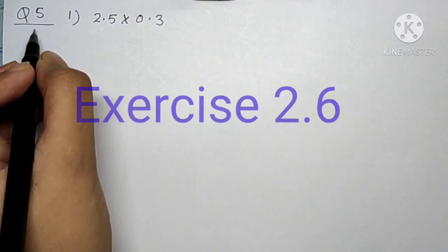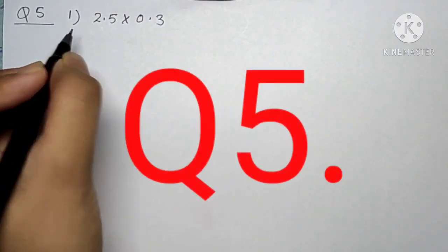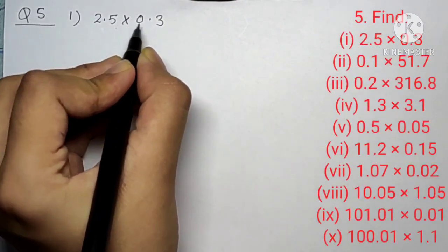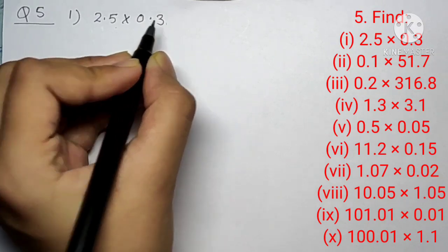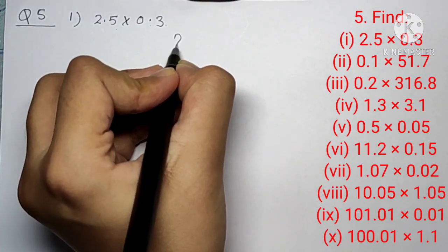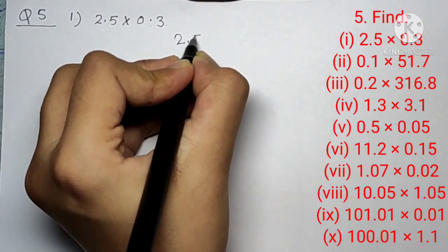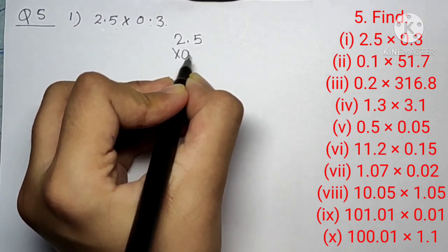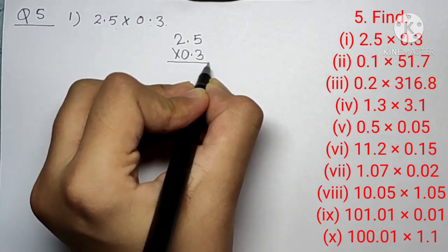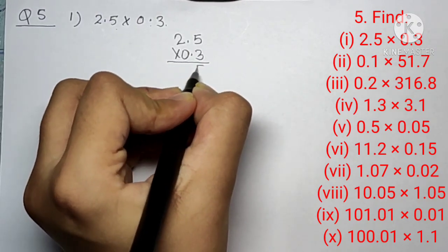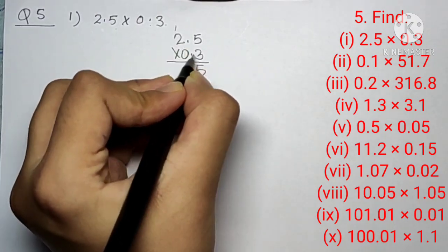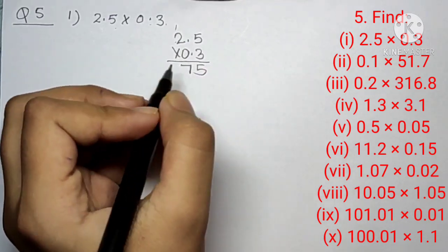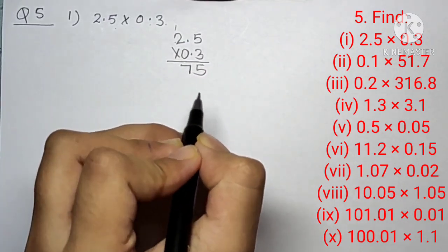Let's start question number five, first part: 2.5 into 0.3. First we will multiply. 5 threes are 15, 3 twos are 6, giving us 17.